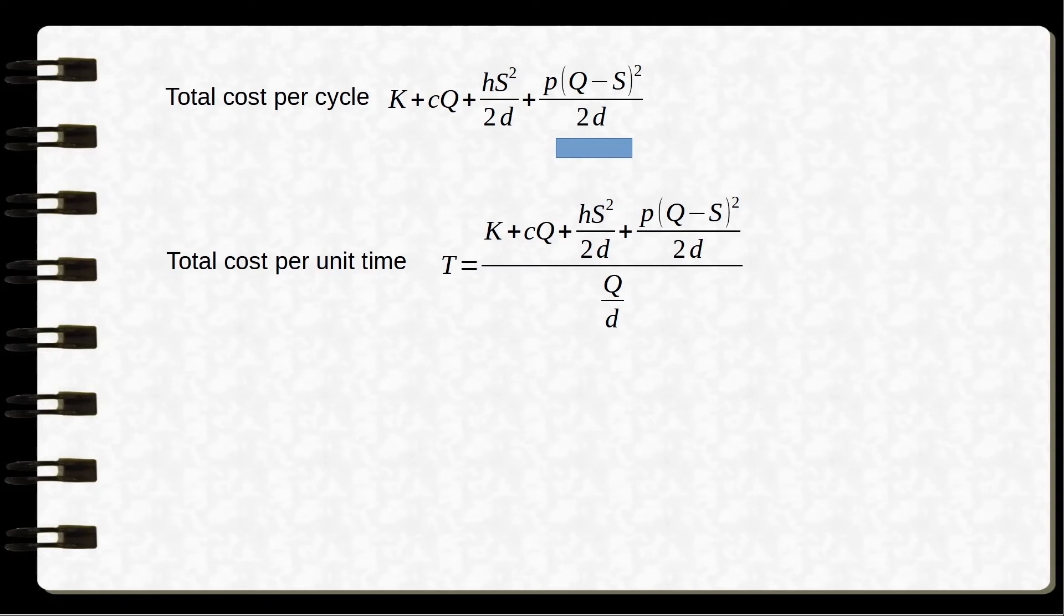We divide the entire quantity by Q by D to find out the total cost per unit time. Now as we can see here, this model with respect to T has two decision variables: one is Q and one is S. Now we differentiate this equation for T with respect to Q and with respect to S.